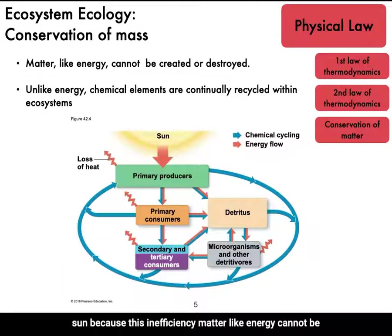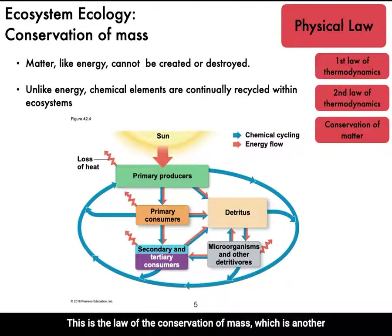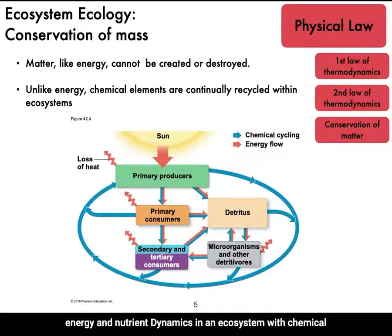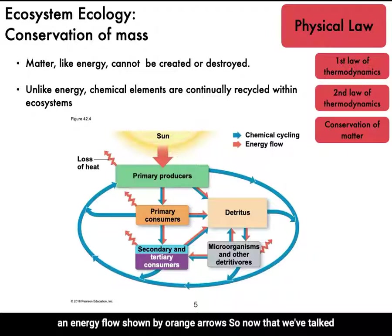Matter, like energy, cannot be created or destroyed. This is the law of conservation of mass, which is another important law for understanding ecosystem functioning. Unlike energy, chemical elements are continually recycled within ecosystems. The figure on the slide shows an overview of energy and nutrient dynamics in an ecosystem, with chemical cycling shown by blue arrows and energy flow shown by orange arrows.